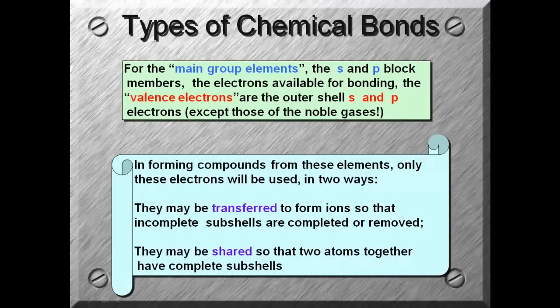For the main group electrons, the s and p block, the electrons available for bonding, the valence electrons, are the outer shell s and p electrons. Like we saw with sodium, it had a 3s1 that was its outermost energy level. In forming compounds, only these electrons, the valence electrons, will be used.